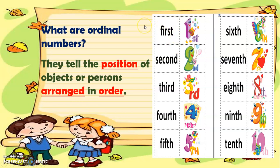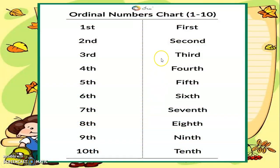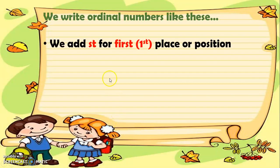So instead of counting one, two, three, four, five, six, seven, eight, nine, ten, we do it this way: first, second, third, fourth, fifth, sixth, seventh, eighth, ninth, tenth. Now, this is an ordinal numbers chart, and as you can see we have here the symbols for the ordinal numbers and their words: first, second, third, fourth, fifth, sixth, seventh, eighth, ninth, tenth.